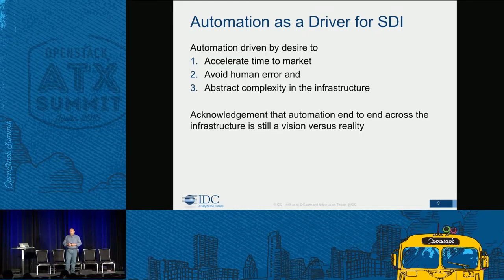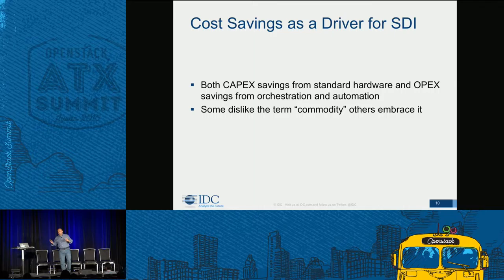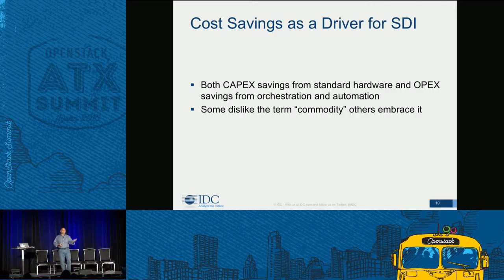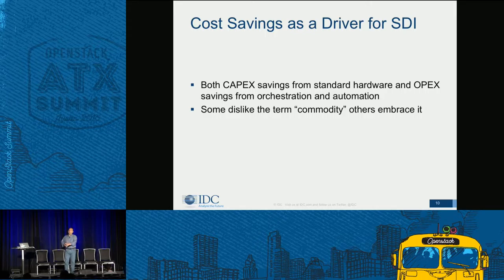On cost savings: it's about moving to an agile cost model where you don't have to provision storage or compute way ahead of time. You want both capex and opex savings — savings from using standard hardware and from orchestration and automation so you use fewer human and technical resources. The word 'commodity' has become a bad word; many prefer 'industry standard.' When you standardize your hardware — whether compute, storage, or networking — you get horizontal cost savings not specific to any particular infrastructure type.